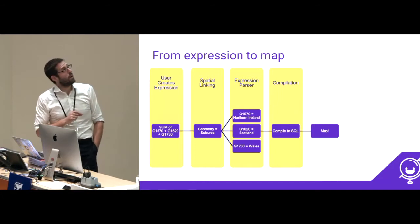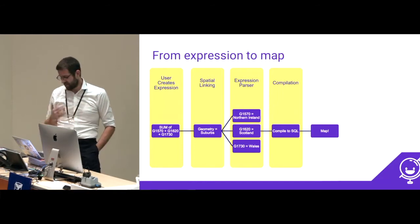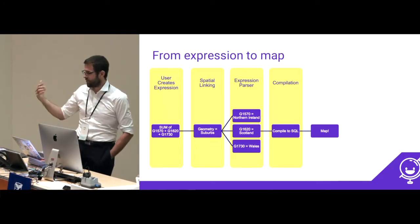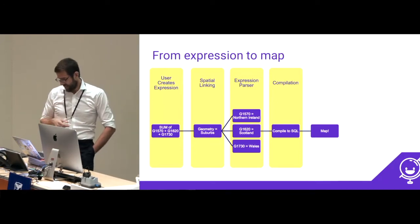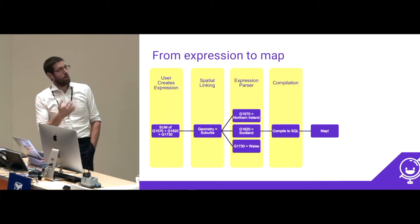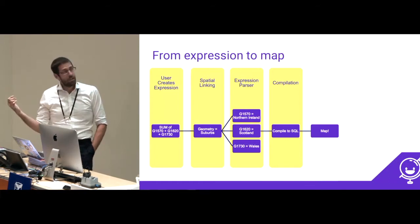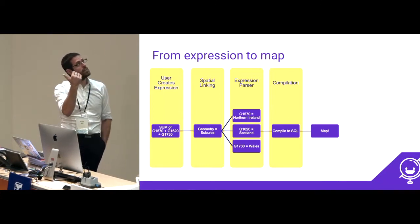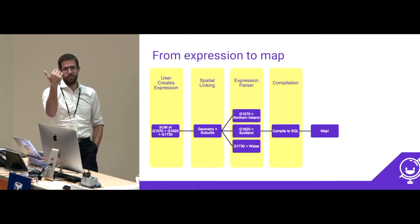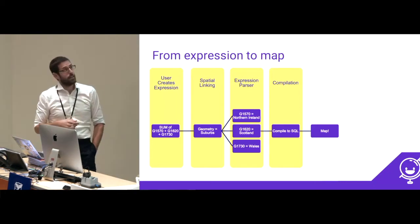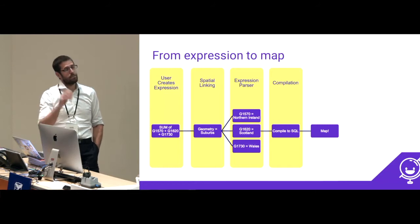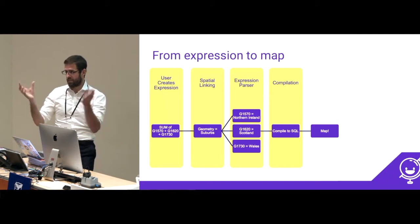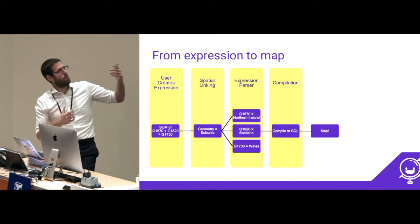So under the hood on the technical level, this is kind of what we're doing. We're taking the user's expression of G1570 and G1620 — those are the internal Census IDs — and translating that into essentially a whole pile of SQL on the other side. Taking the suburbs geometry in this case, and then passing that expression out to those individual databases and columns in there. Through SQLAlchemy, spitting out a pile of SQL that does the joins and connections, and bam — that's the entire dataset built on the fly for whatever that expression is.